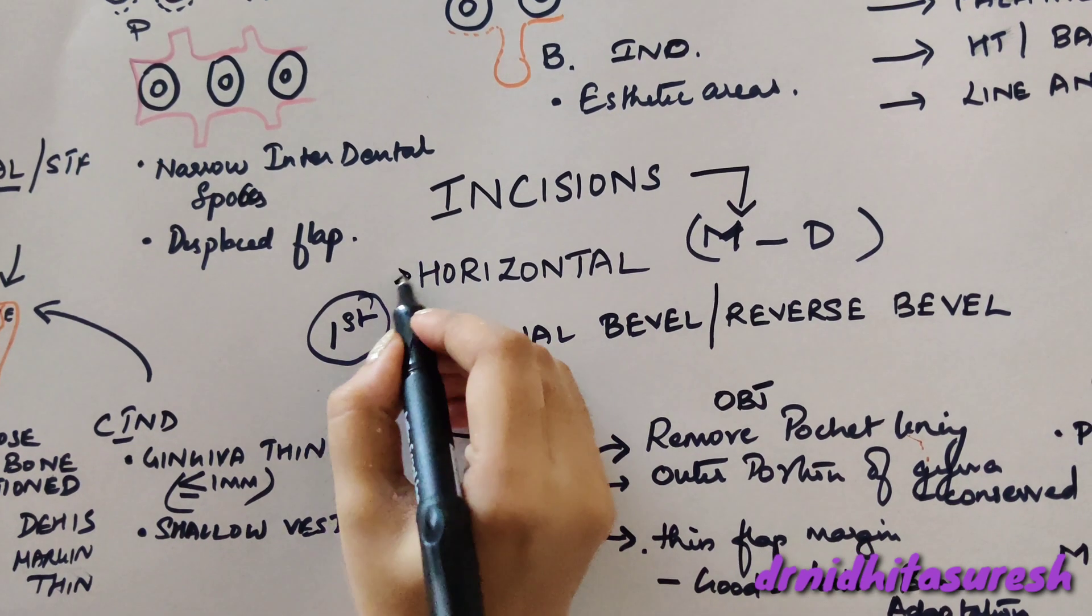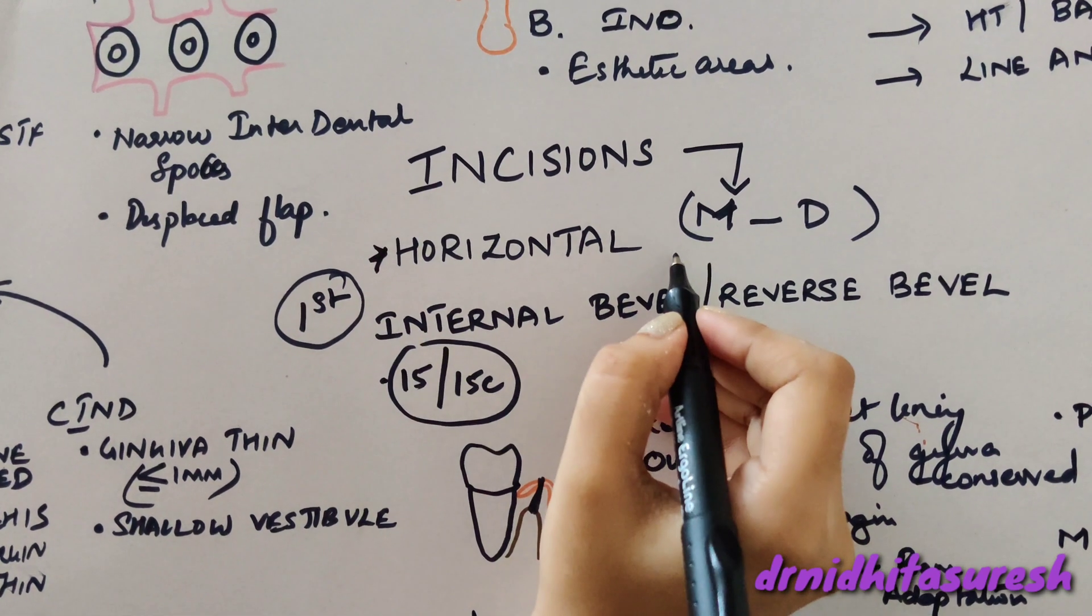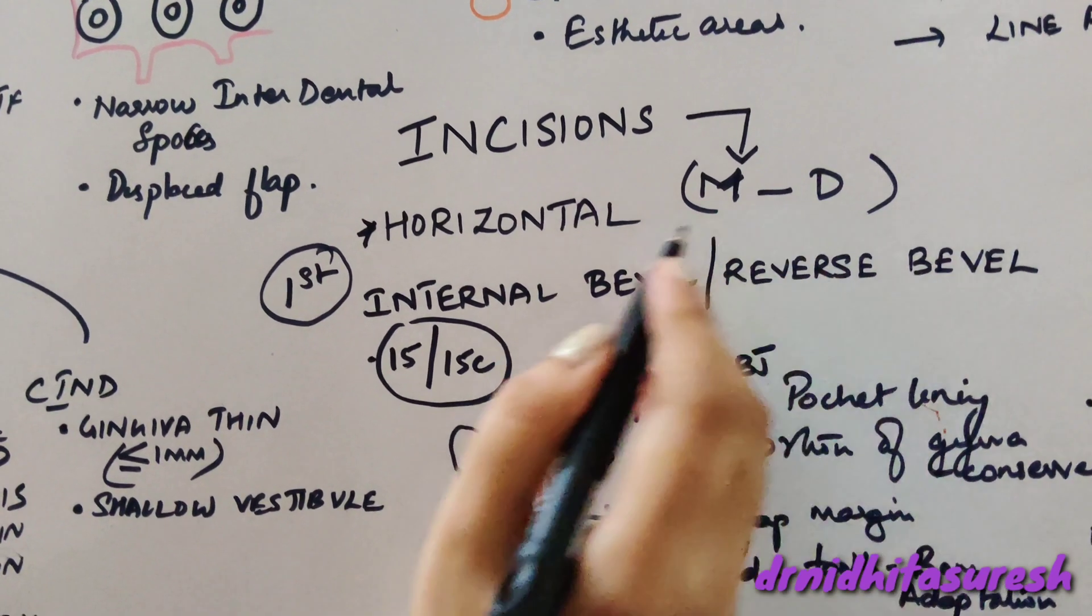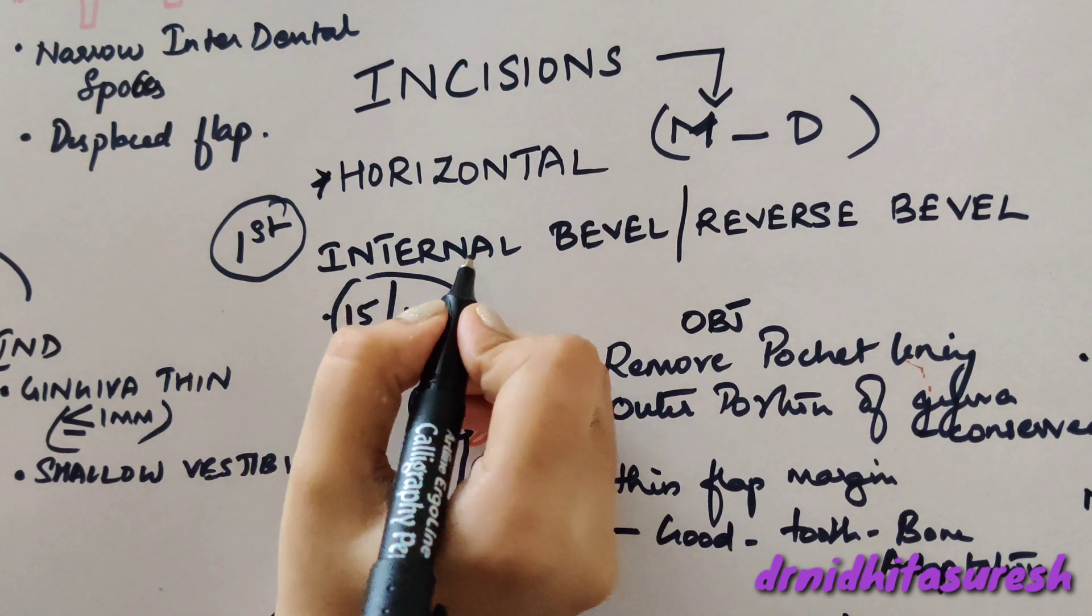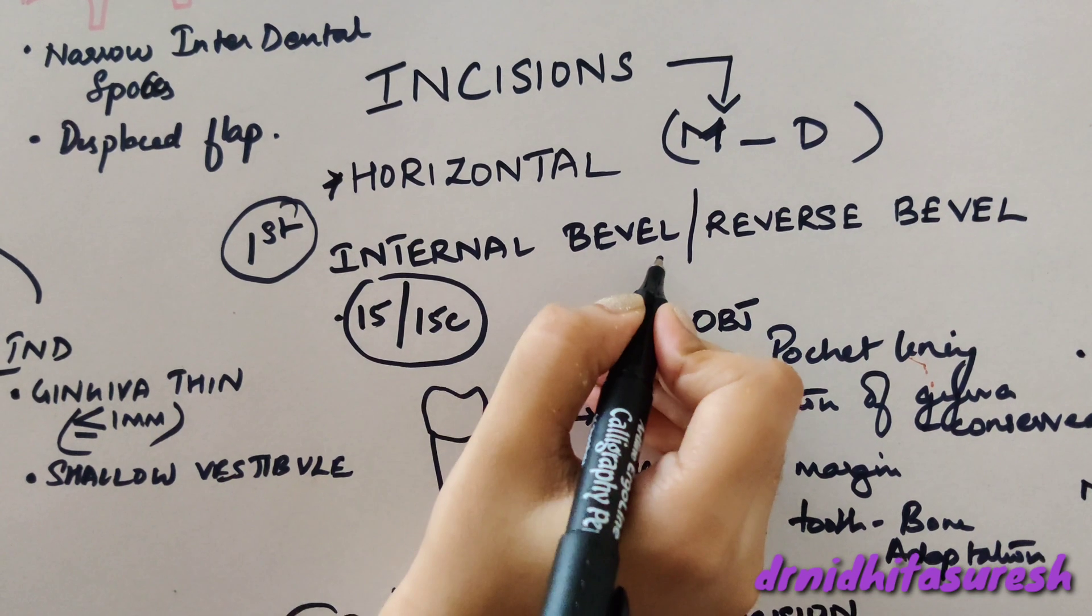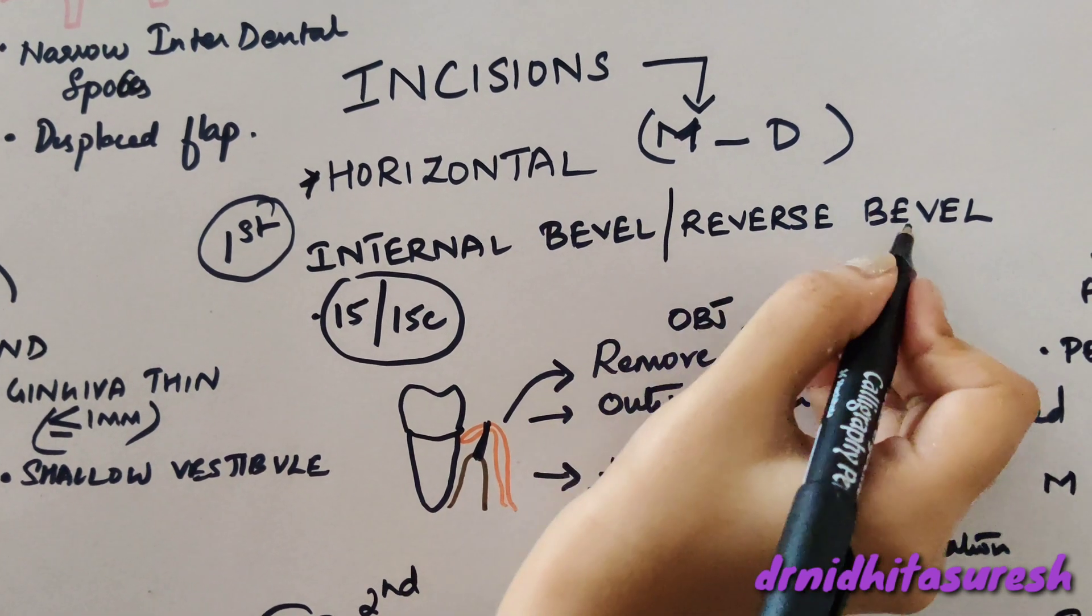So what are horizontal incisions? They are incisions given from mesial to distal direction. The first incision is the internal bevel incision, also called reverse bevel incision.